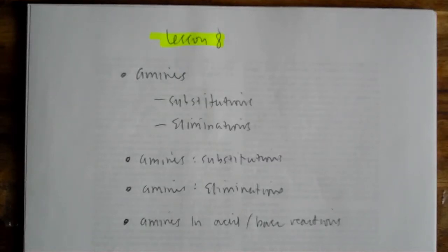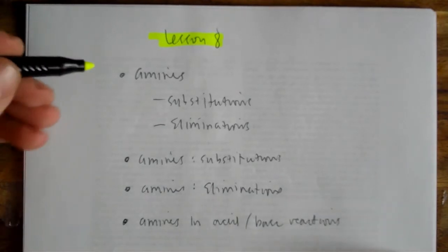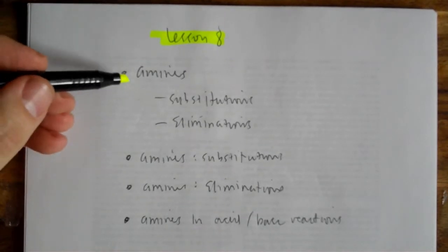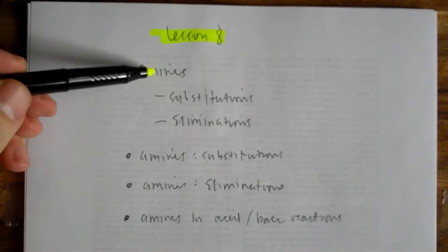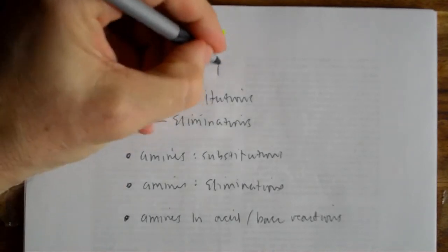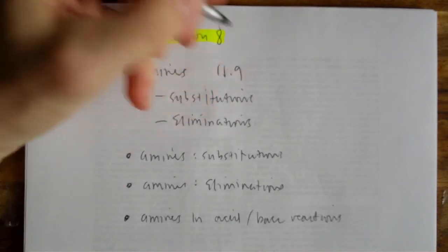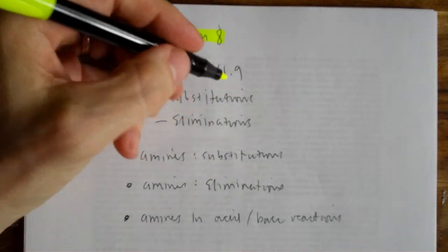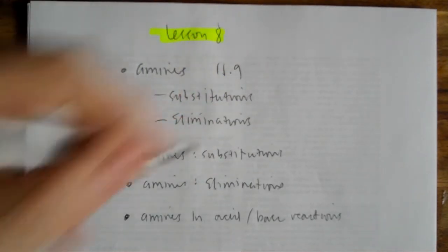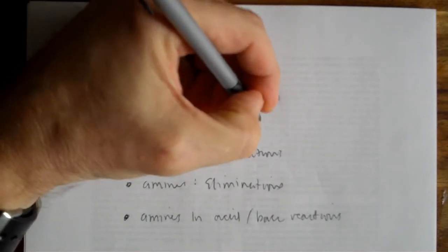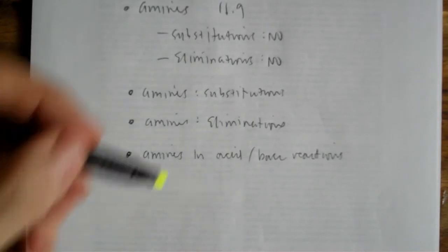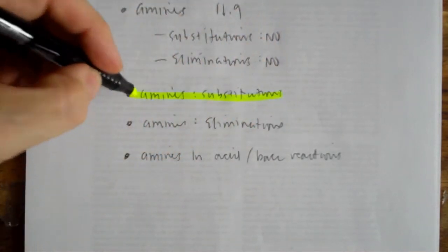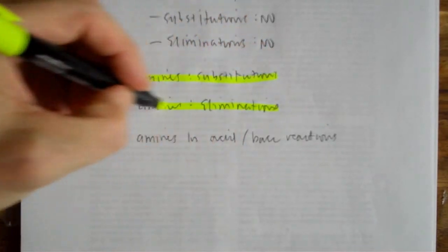This is lesson 8 which is dedicated to amines and it's got three parts to it. Number one is we find out from section 11.9 that amines don't undergo substitutions, and they don't undergo eliminations. And then we learn about amines in substitutions and amines in eliminations, kind of funny.